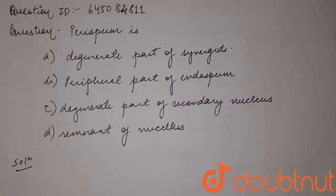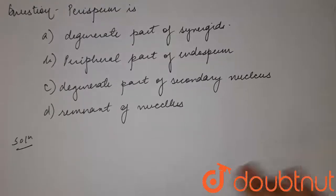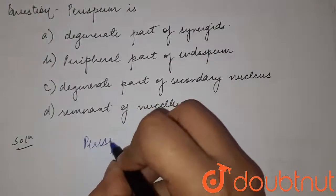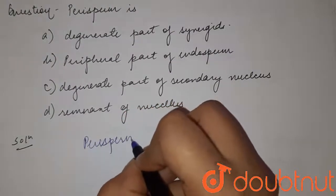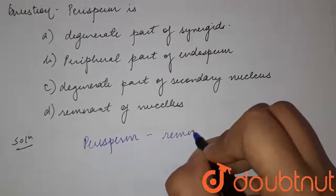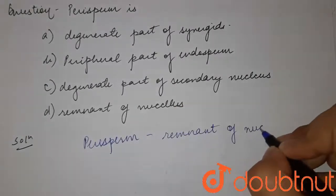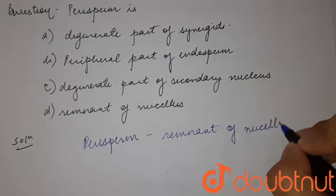The question is: perisperm is (a) a degenerate part of synergid, (b) peripheral part of endosperm, (c) degenerate part of secondary nucleus, or (d) remnant of nucleus. The perisperm is the remnant of the nucleus — remnant of nucleus which are persistent.